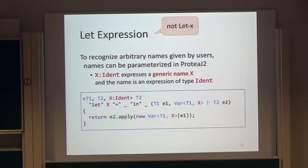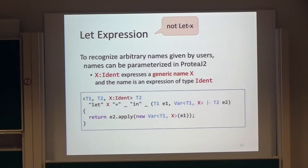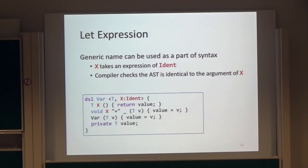To recognize arbitrary names given by users, names can be parameterized in ProTJ2. Here, X colon ident is a parameterized name. X is the name of the parameterized name, called generic names. Ident is the type of the name.